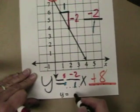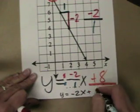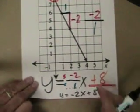Rewrite the rule: Y equals negative two x, because it's going down, plus eight. That's what negative two over one will give us.